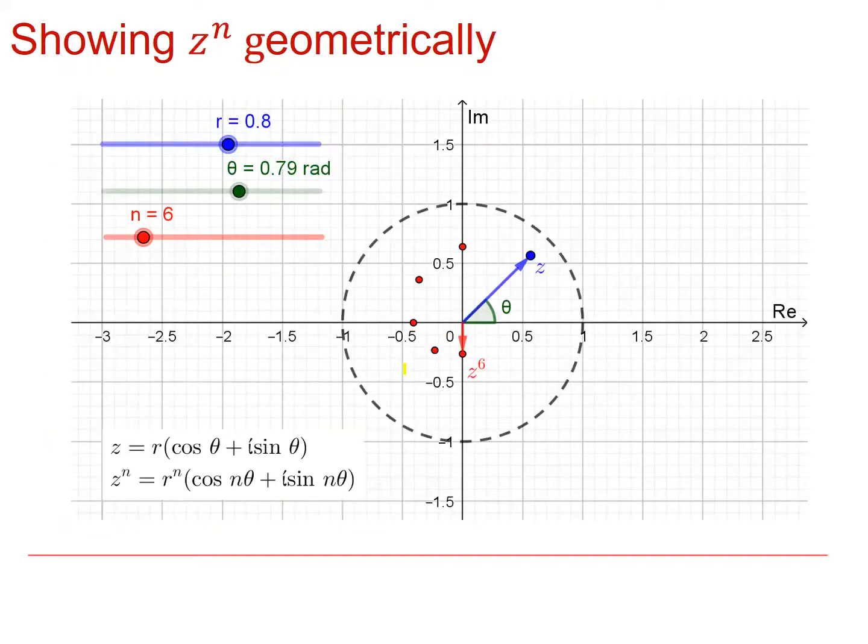Let's have a look at z to the n geometrically. To do this, we're going to look at a dynamic plot of z to the n. On this dynamic plot, I'm going to be able to alter the modulus of z, the argument of z, and the maximum power. There's my original number, and then these are the powers squared, cubed, power 4, power 5, and power 6 for this particular plot.